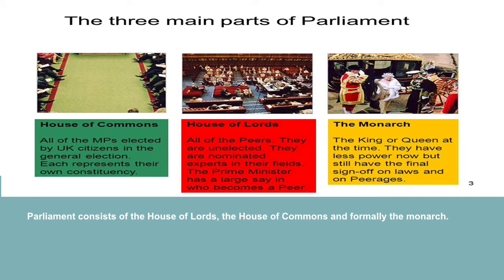Parliament consists of the House of Lords, the House of Commons, and formally the monarch. It assembles as a unified body only on ceremonial occasions, such as the state opening of Parliament by the monarch in the House of Lords. Here it listens to the monarch's speech from the throne, which outlines the government's broad legislative program for the coming session. All three parts of Parliament must normally pass a bill before it can become an act of Parliament, and therefore law. A correctly created act cannot be challenged in the law courts on its merits. A Parliament has a maximum duration of five years, but it is often dissolved and a general election called before the end of this term.